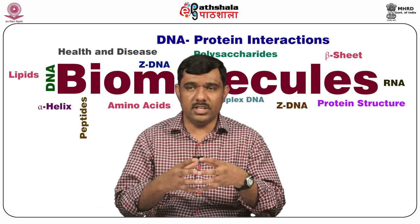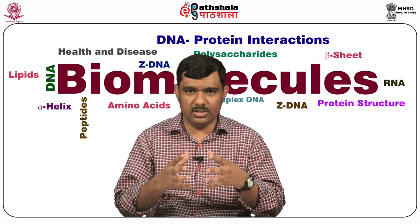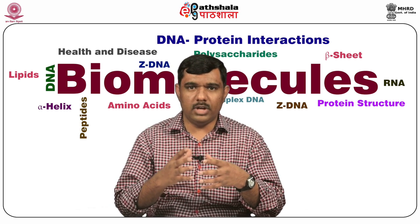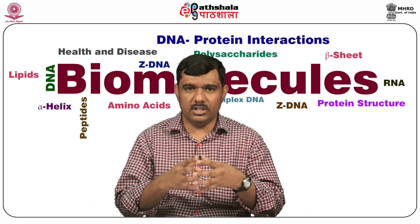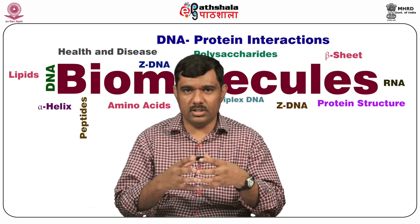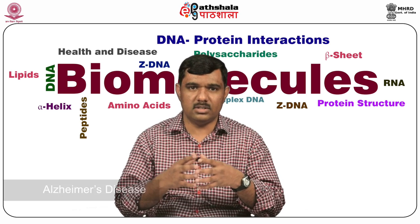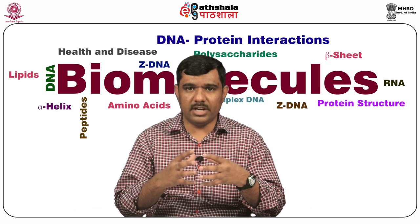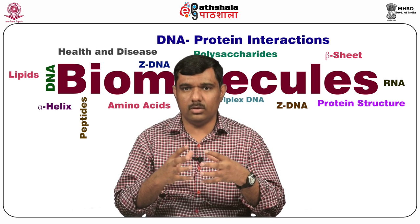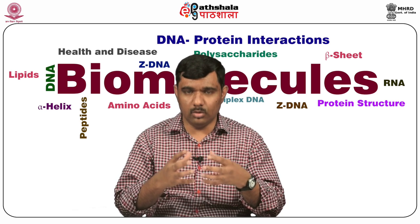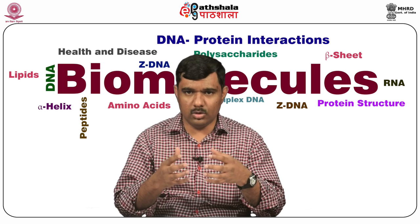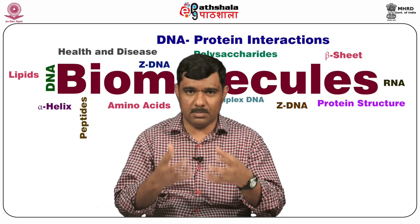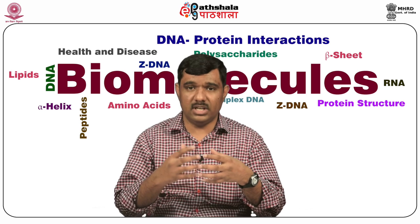Mutations in glucose transporters lead to various diseases: mutation in GLUT1 leads to GLUT1 deficiency syndrome; mutation in GLUT2 leads to type 2 diabetes mellitus; and mutation in GLUT3 leads to Alzheimer's disease. In this module we will discuss the structure of GLUT3 transporter in complex with alpha-D-glucose, beta-D-glucose, and maltose (an exofacial inhibitor), and see how the structure explains substrate specificity and selectivity.